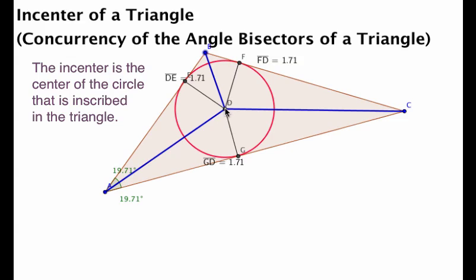So, D also happens to be the point that is the center of the circle that can be inscribed in the triangle. And inscribed basically means that the circle is going to touch each one of the three sides, and it's going to remain inside of the triangle.